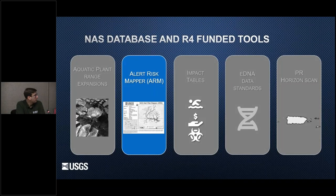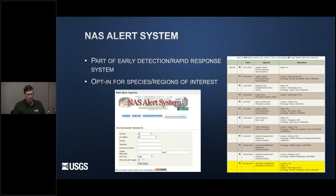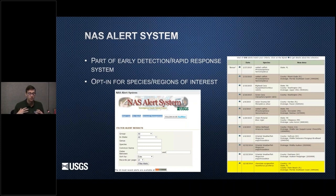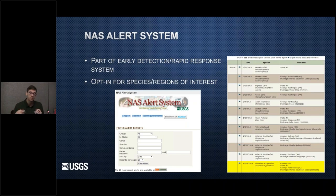The Alert Risk Mapper is an interesting project. One of the main roles for the NAS database is in helping with early detection rapid response for non-native aquatic species. Our alert system was developed in 2004 and is an opt-in system to alert and notify registered users of a new introduction within the country. This is done at four hierarchical levels: species new to the country, new to a particular state, new to a particular county within the state, or new to a HUC-8 watershed. These are all push notifications — they get emailed out. When users register, they can sign up for alerts for a particular state, multiple states, or a particular region.